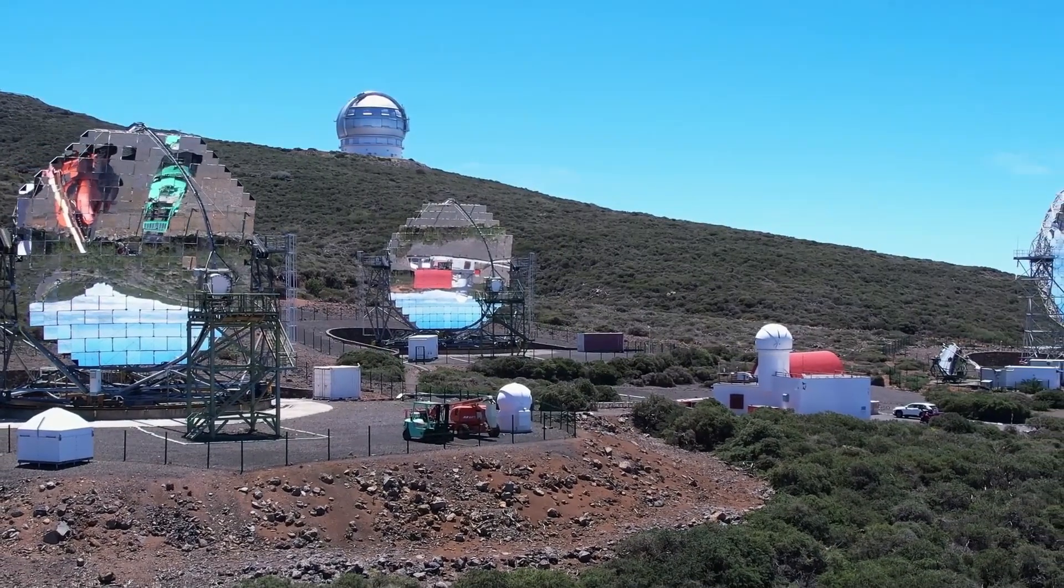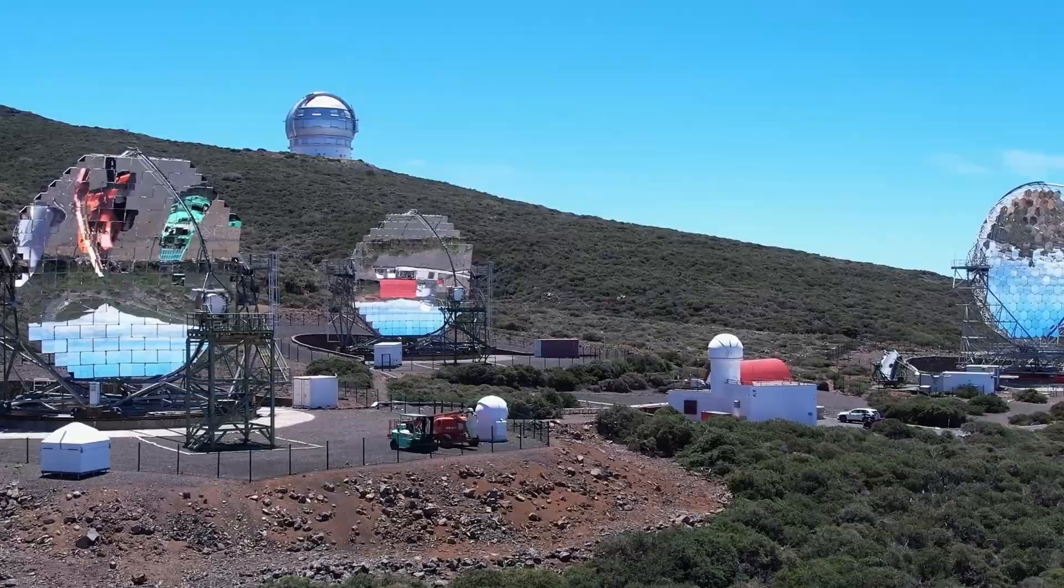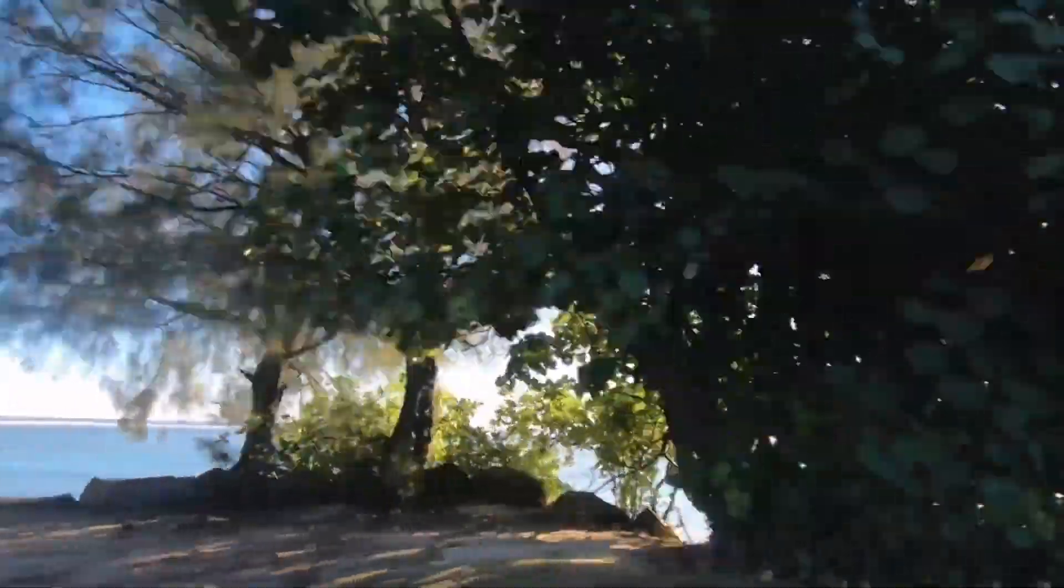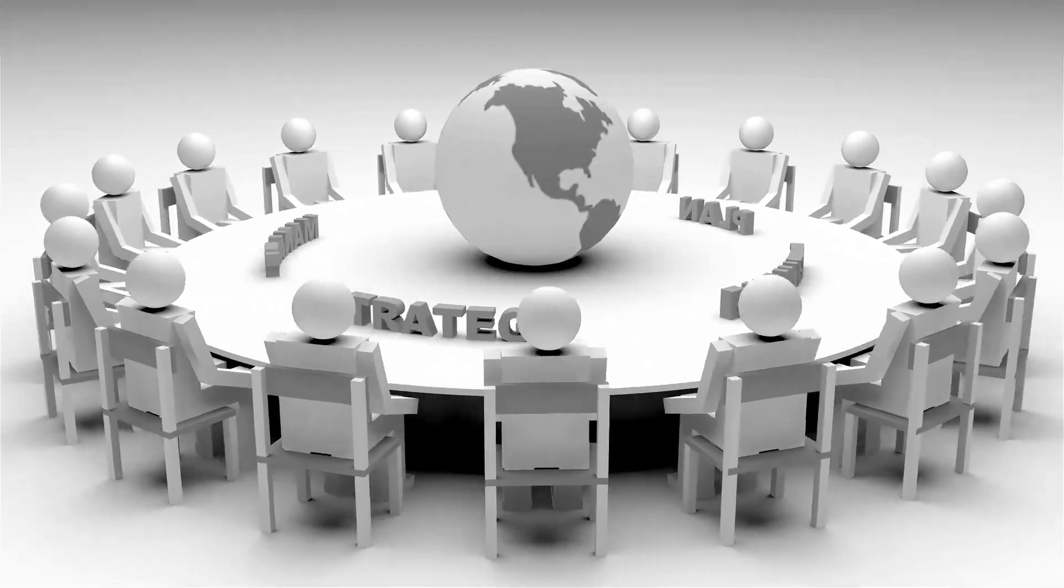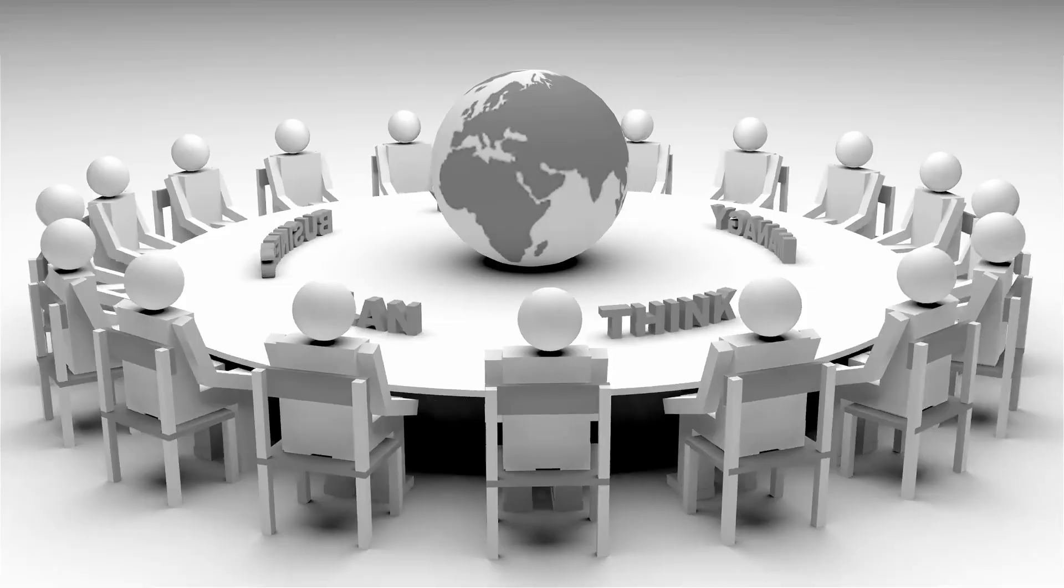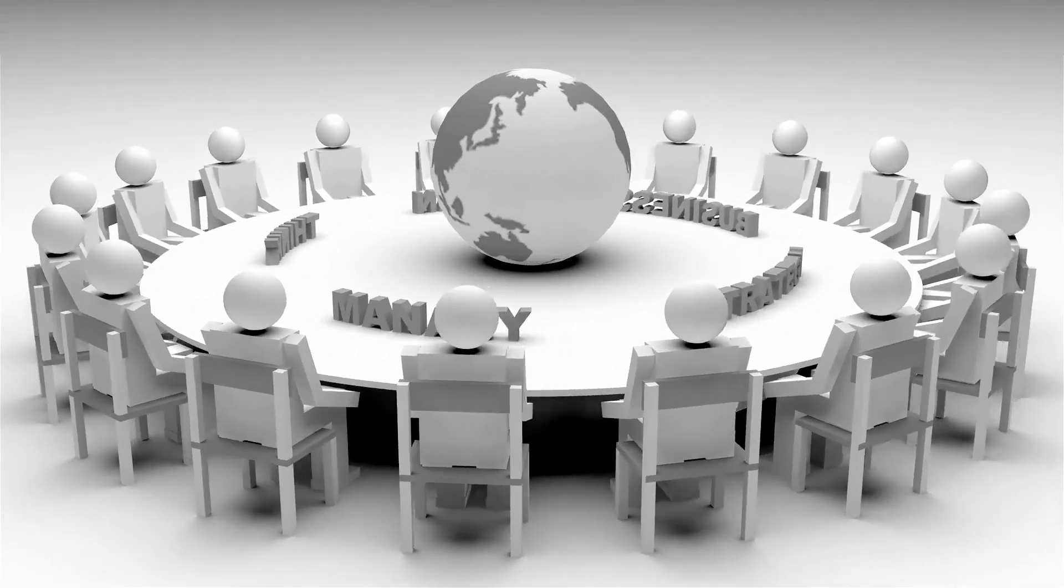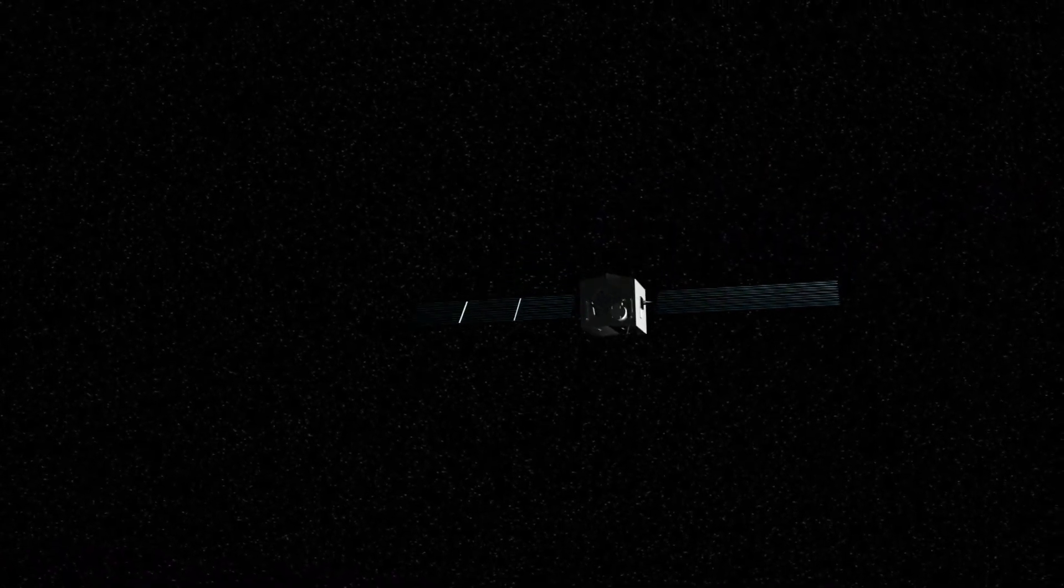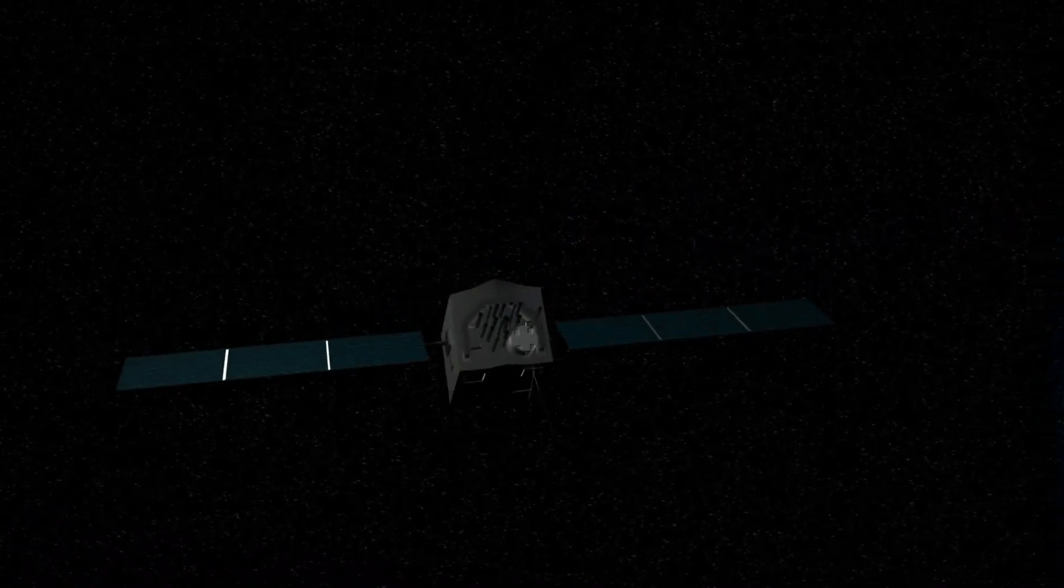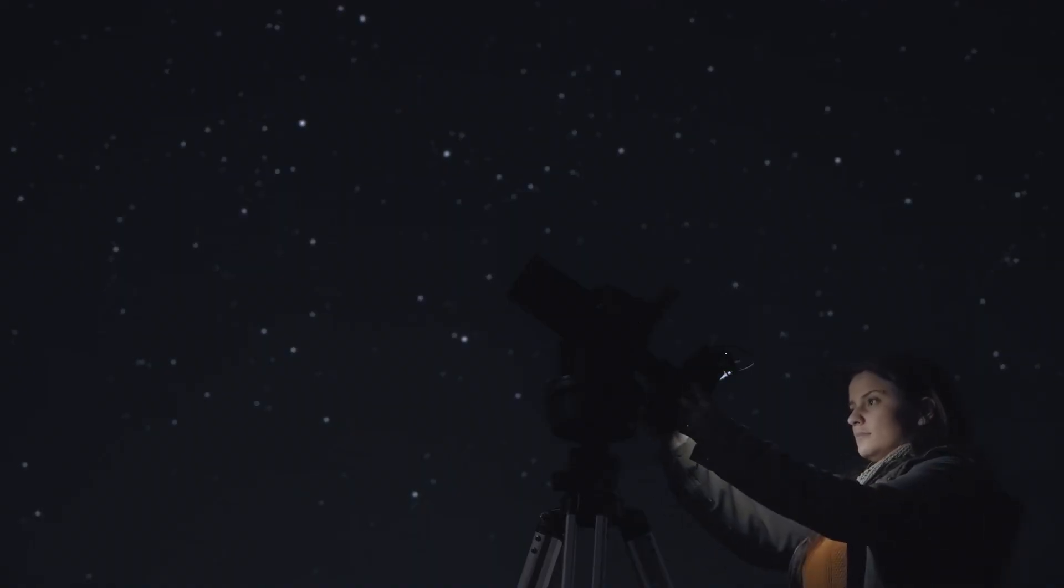What's about to be revealed about Atlas's true size, its internal structure, and what it's been doing as it approaches Earth is going to fundamentally change everything we thought we knew about this object. The miscalculation wasn't a simple error. It was systematic, deliberate, like Atlas was designed to appear smaller than it actually is until it got close enough that the truth couldn't be hidden anymore. This isn't a rock from interstellar space. This is something built, and it's almost here.